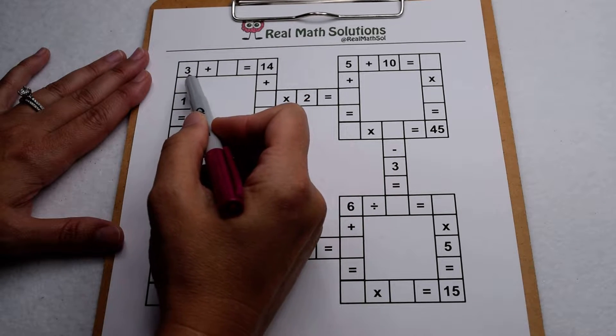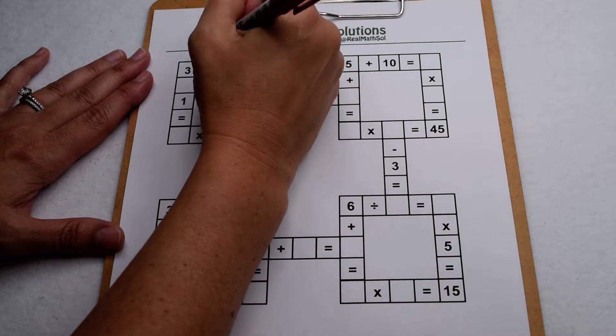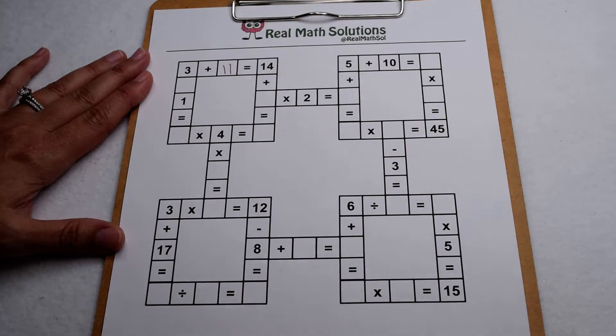We're gonna start here in the top left corner. 3 plus something gives me 14. Well we know 3 plus 11 gives us 14 so we're gonna go ahead and fill that in.